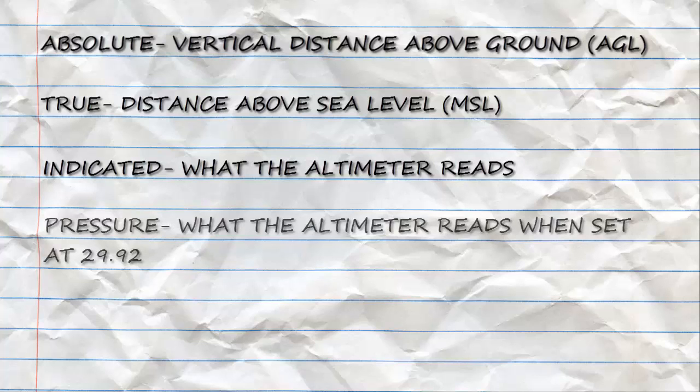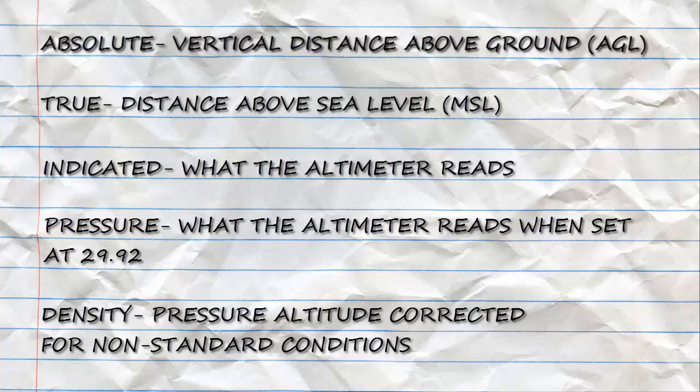Pressure altitude, the altitude of a given pressure surface in the standard atmosphere. This is displayed when the altimeter is set to 29.92. And density altitude, pressure altitude corrected for non-standard temperature differences.